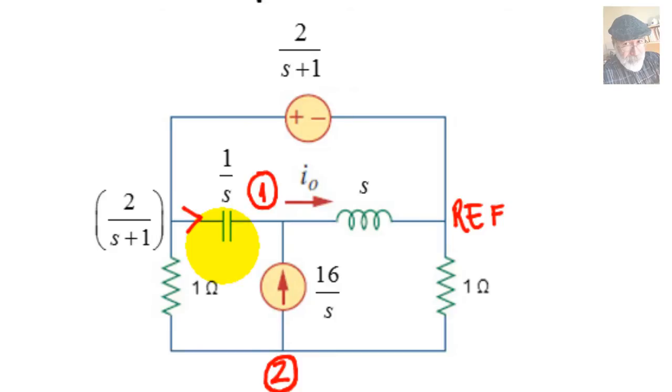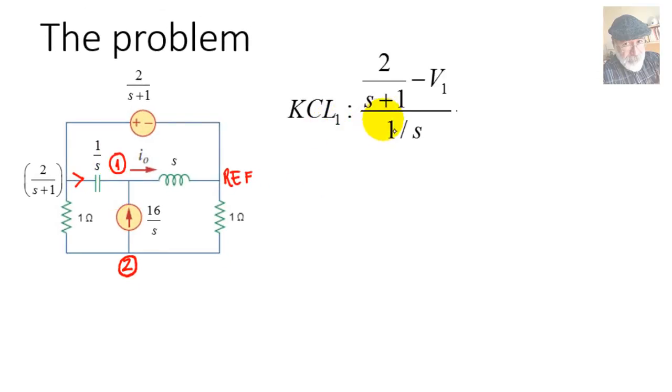Let's write a KCL equation for that node 1. Two currents going in, this one and that one, so two terms on the left, equals to the current leaving the node. Let's write KCL. This current would be this voltage, 2 over s plus 1, minus V1, which is an unknown, divided by the impedance. So KCL1, the first term, is the voltage of the node on the far left, 2 over s plus 1, minus V1, over the impedance 1 over s. That is added to the current coming from the current source, 16 over s. And that is equal to the only one current leaving the node, that is V1 minus 0 divided by s, V1 over s.